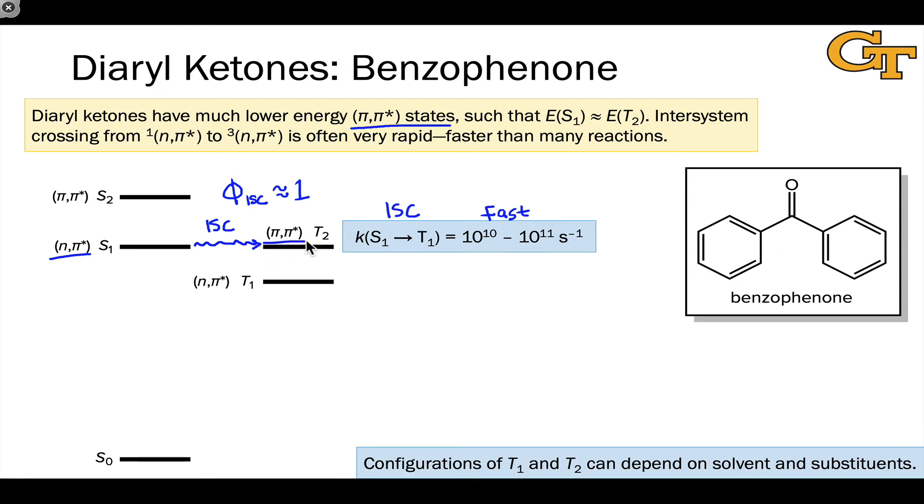In this example, π,π* is at a higher energy than n,π*. But this can be changed through subtle changes to the solvent and substituents on the aromatic rings.